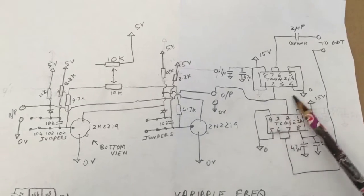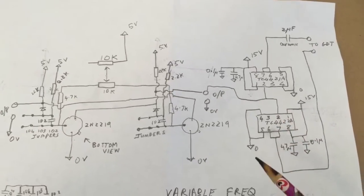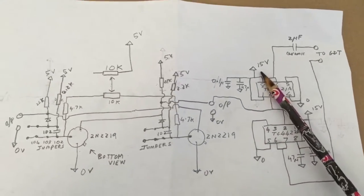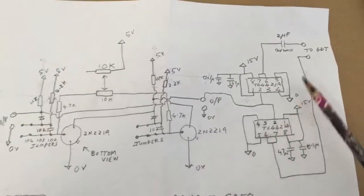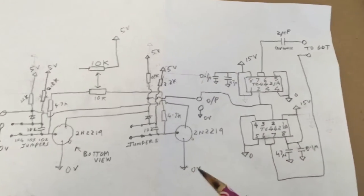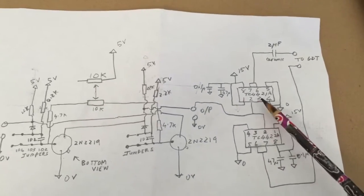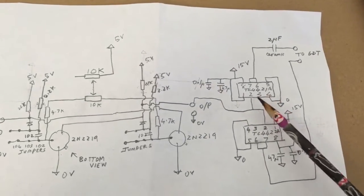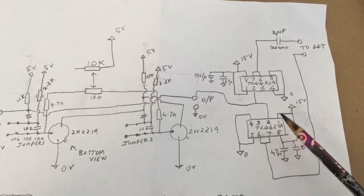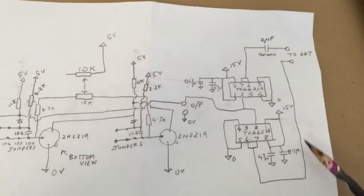These are driven at 15 volts, so I'm driving this part with 5 volts and this part with 15 volt DC using voltage regulators. These are inverting and non-inverting respectively - so this is non-inverting and this is inverting.